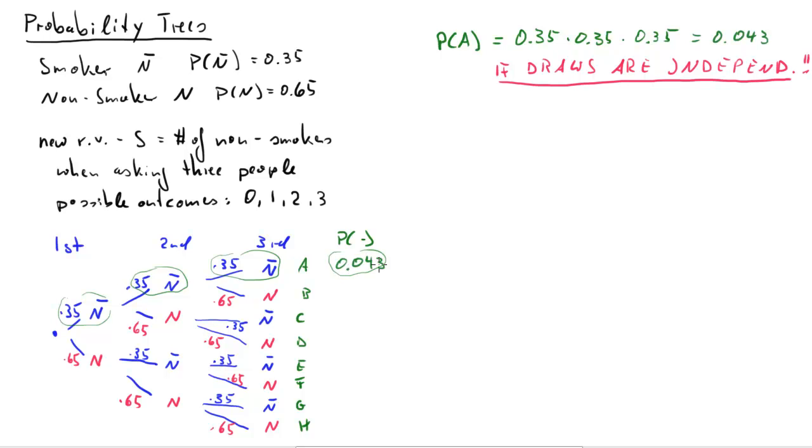So here the result is 4.3%. Now let's look at the outcome B. The probability of outcome B. The first two bits are exactly the same. But the last bit will pick a non-smoker. So here the probability will be 0.35 times 0.35 times 0.65 and that's 8%.